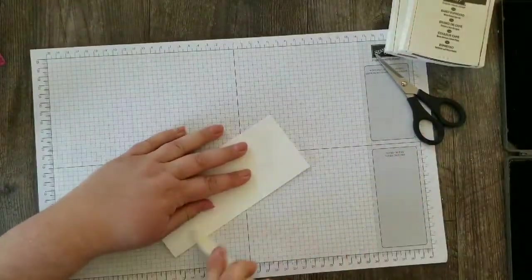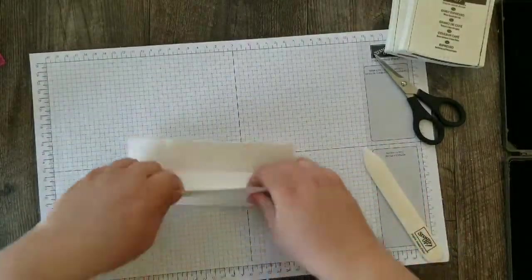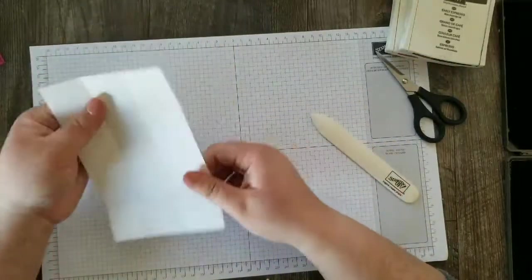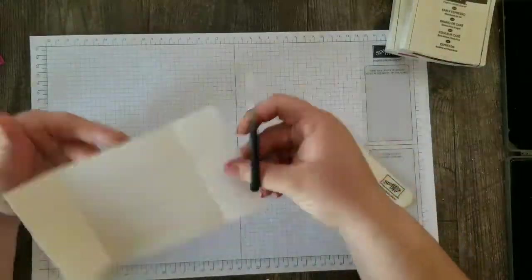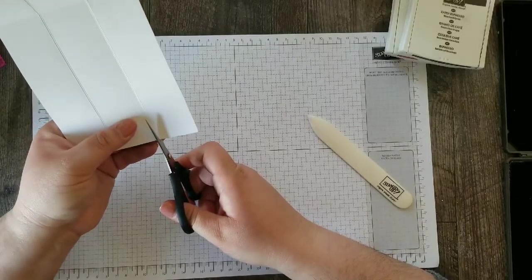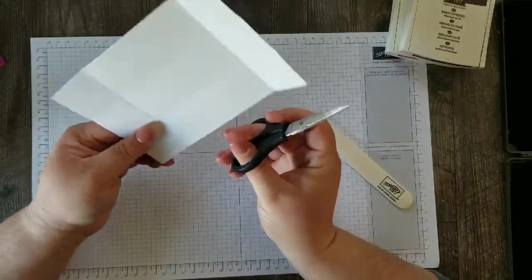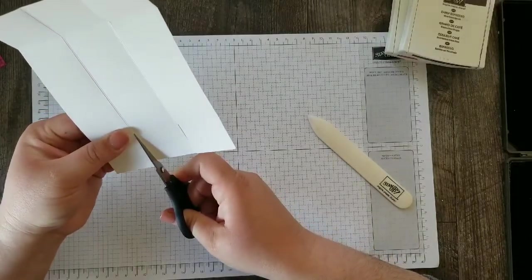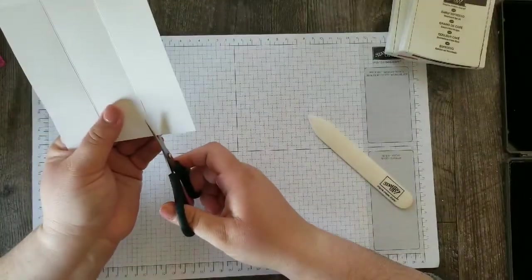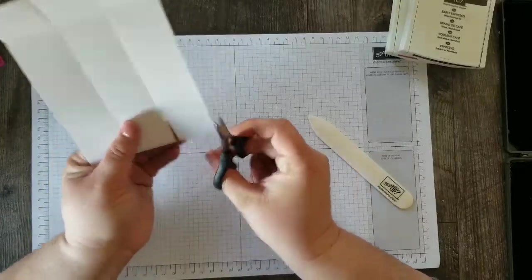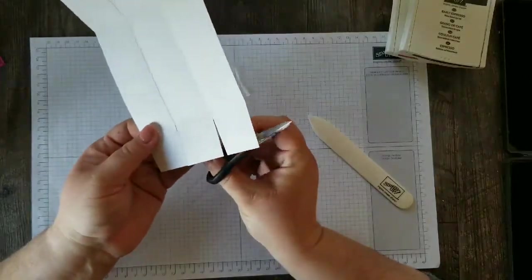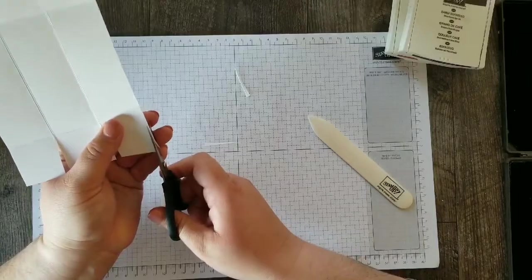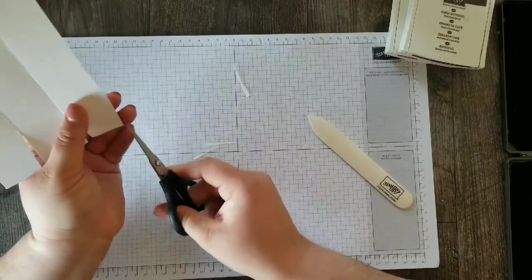Next I'm going to fold on all the score lines. And I'm going to come in here. And I'm just going to snip up the score line. And to make it easier to fold this box together, I'm going to cut a notch out here where our seams are going to come together.